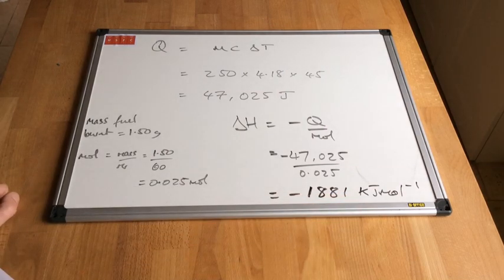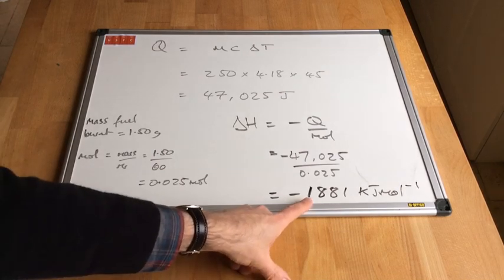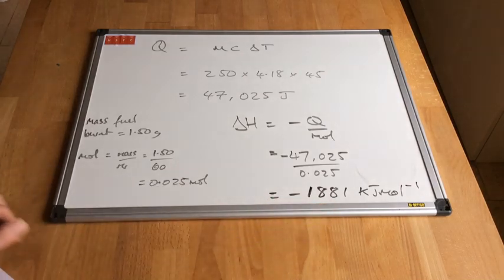So our delta H for the reaction, the enthalpy change of combustion, is coming out at minus 1,881 kilojoules per mole.